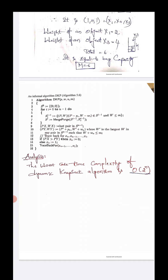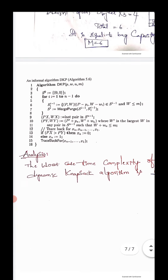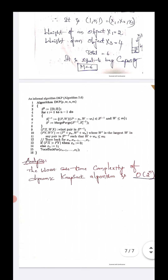After the loop, find (PX, WX) as the last pair in S^(N-1). Then compute (PY, WY) = (P1 + PN, W1 + WN), where W1 is the largest weight W in any pair in S^(N-1) such that W + WN ≤ M. Trace back for XN, X(N-1), ..., X1: if PN = 0 then XN = 0, else XN = 1.